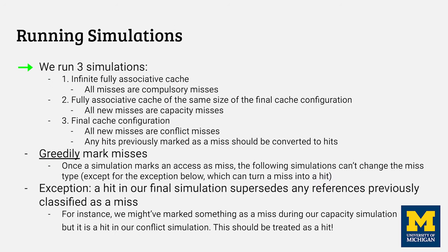Now let's actually classify a series of references by running three different simulations. First, we pretend that we have an infinite fully associative cache. We simulate every single memory reference against this pretend cache, and anything that's a miss gets marked down as a compulsory miss. Next, we put a size limit on our imaginary cache — now we have a fully associative cache with the same size as the actual cache we're considering, and every miss that wasn't already marked as compulsory is now a capacity miss. Finally, we run a simulation with the actual cache. Any miss not marked as compulsory or capacity is a conflict miss, and anything that's a hit here but was previously classified as a miss should be changed back to a hit.